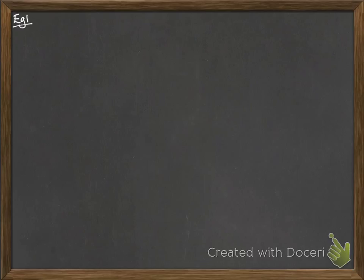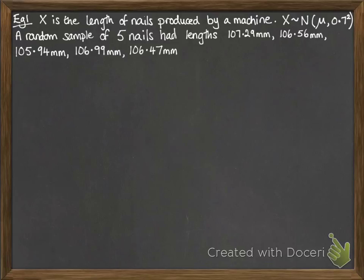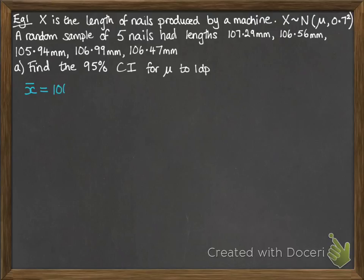Let's see how we put these into practice. X is the length of nails produced by a machine. X follows a normal distribution with mean μ and variance 0.7². We're going to take a random sample of five nails with the following lengths. We want to find the 95% confidence interval for μ to one decimal place. So we first need to know what x̄ is from our sample, the sample mean.